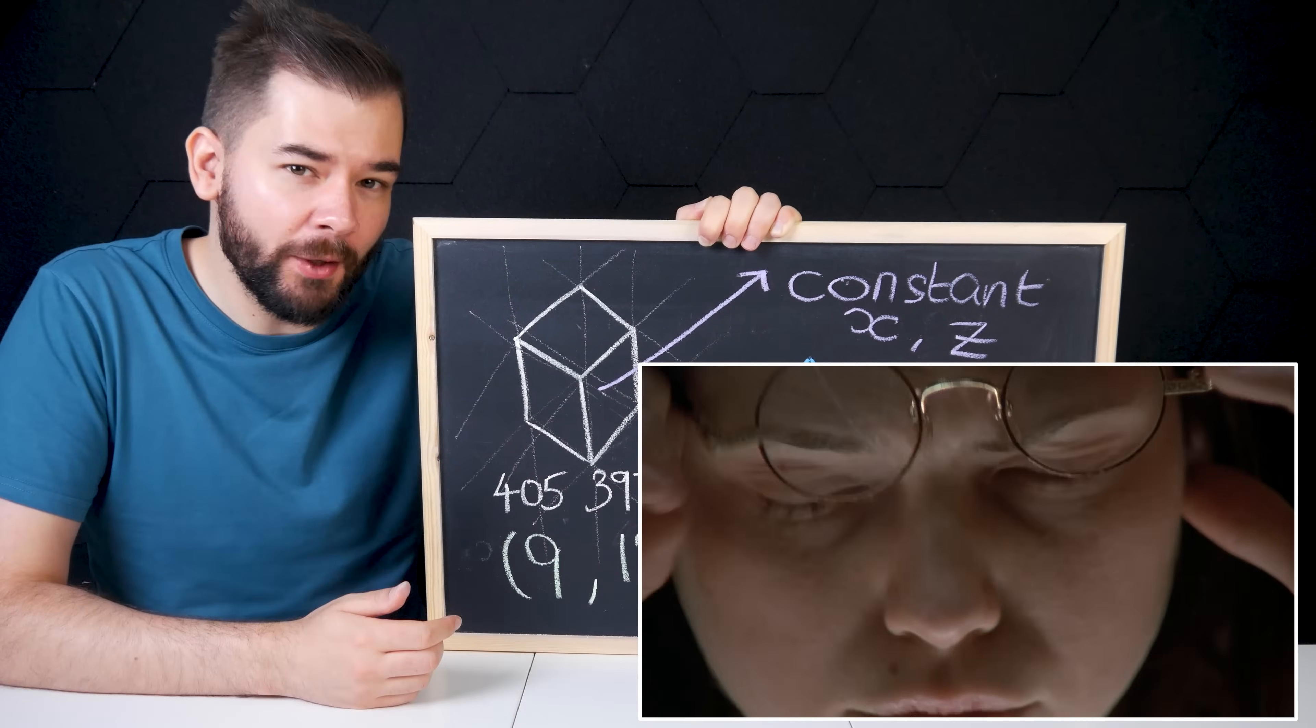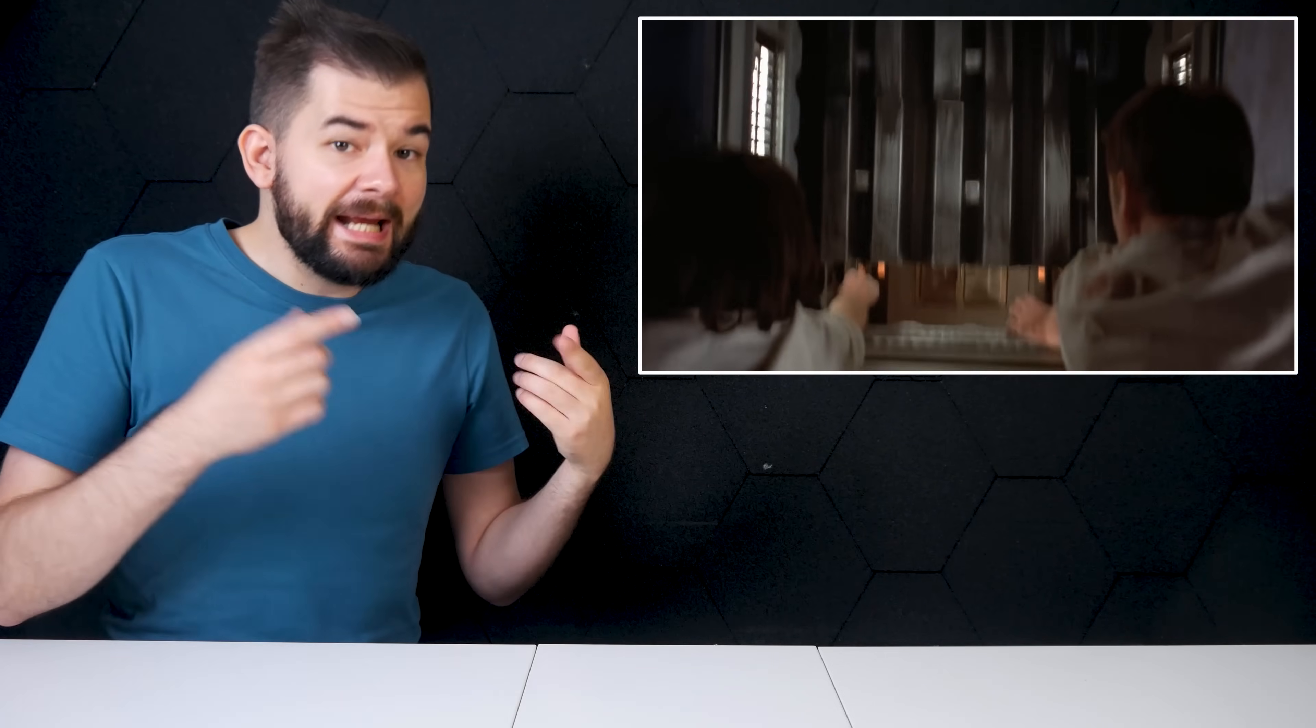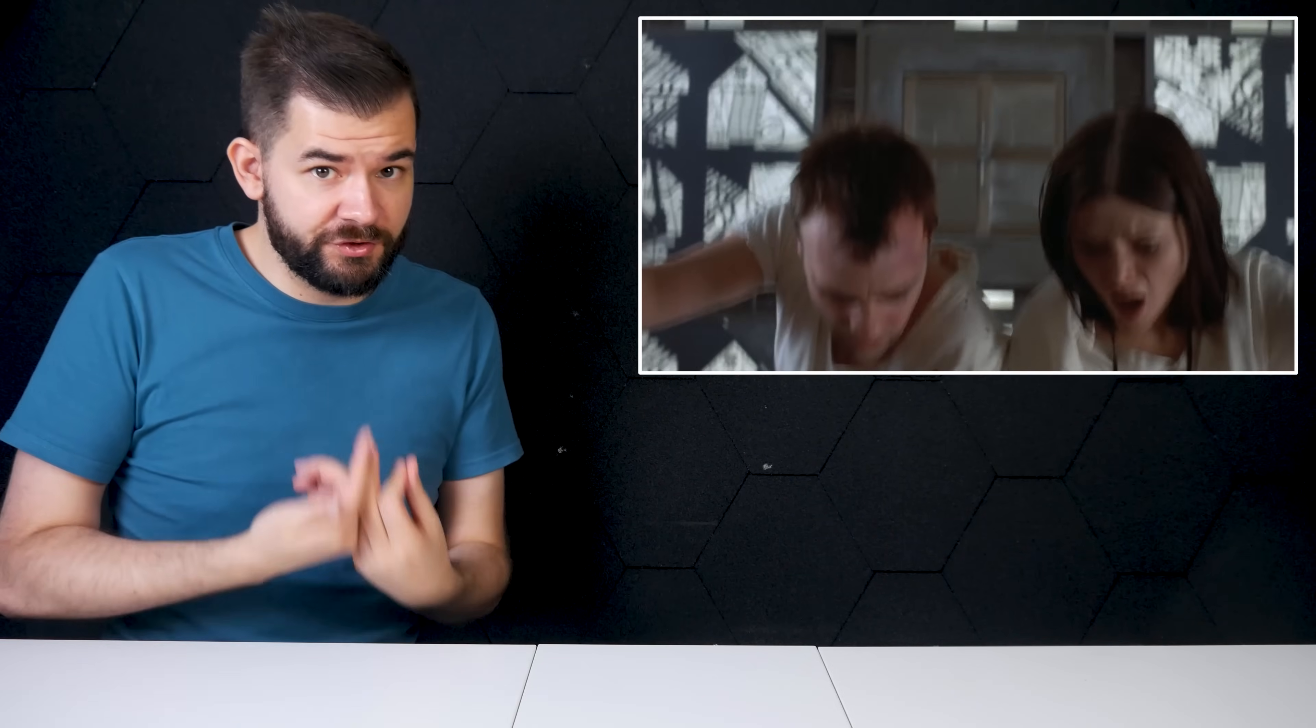What complicates things is that they later learn that the rooms slide around and change position. It's clear that only some of the rooms shift, otherwise the characters would have experienced motion in the room they're in much sooner in the film, but there's no insight into which rooms move. But Levin does realize that the numbers also encode how the rooms shift.